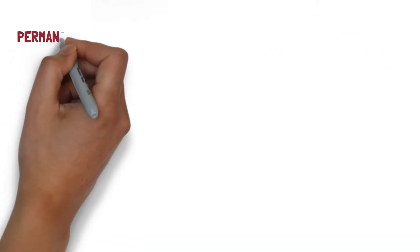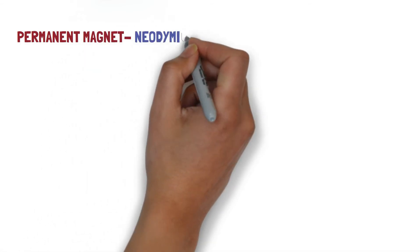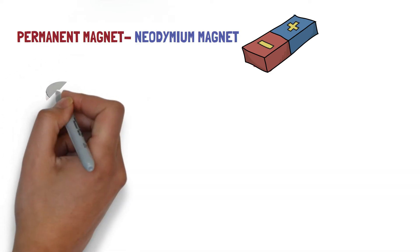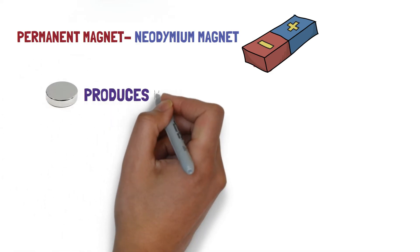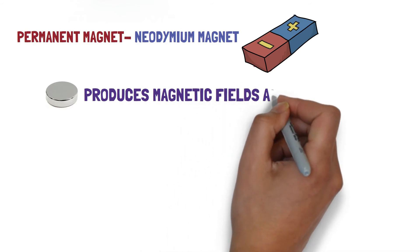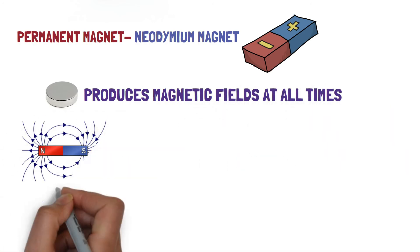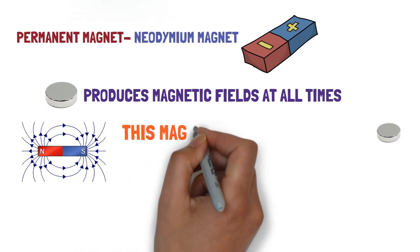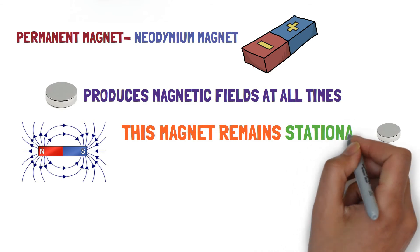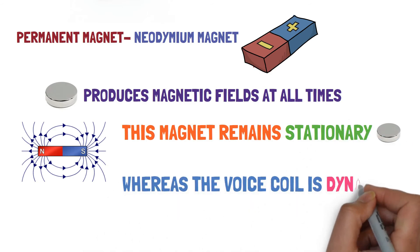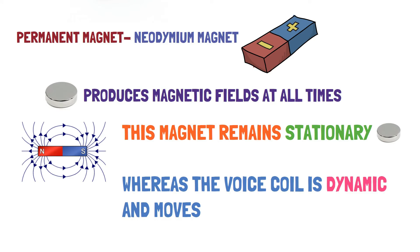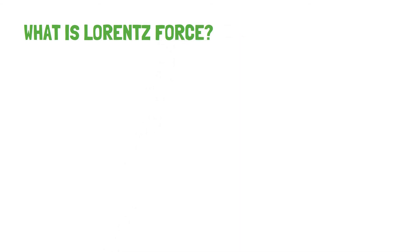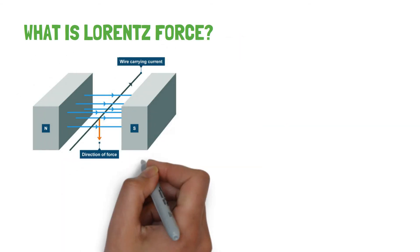Electromagnets are a kind of temporary magnet — they become magnetized only when an electric current is passed through them. Whenever current is applied as an audio signal, the voice coil gets magnetized accordingly. In the smartphone speaker, the voice coil is used as a temporary magnet, while a neodymium magnet is used as the permanent magnet. A permanent magnet produces fixed magnetic fields at all times, and the voice coil is dynamic, moving according to the audio signal. The interaction between the permanent magnet and voice coil occurs under a phenomenon called the Lorentz force.